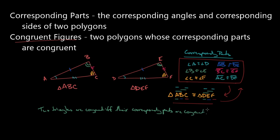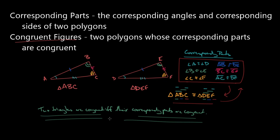Two triangles are congruent if and only if their corresponding parts are congruent. This statement, being biconditional, is true in both directions: if two triangles are congruent, then their corresponding parts are congruent; and if all the corresponding parts are congruent, then the triangles are congruent. This is actually true not just for triangles, but for any polygon.